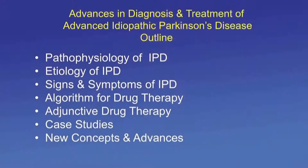Our outline covers pathophysiology of Parkinson's disease, the etiology, signs and symptoms, algorithm for drug therapy, adjunctive drug therapy — which is key in advanced Parkinson's patients — two case studies, and new concepts and advances that are in the future.